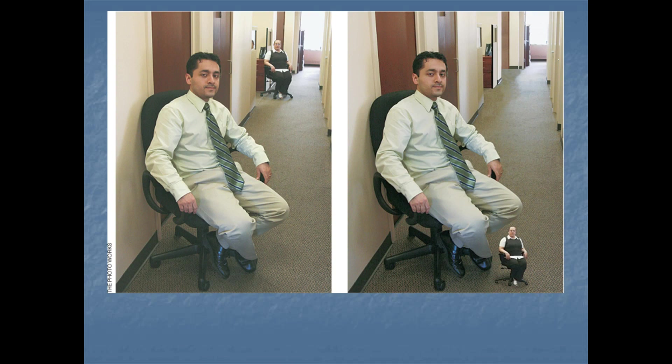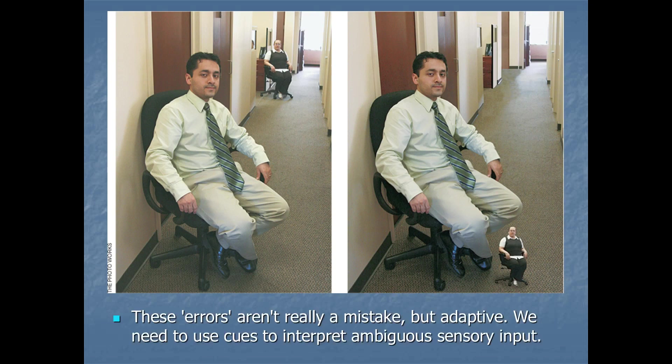So these are just examples. These all these illusions that we've seen here, and we'll see lots more throughout the semester, they're kind of errors in our system where what we perceive is not a direct match with reality. We're not perceiving reality correctly. That's what we call them illusions. But these errors aren't really a mistake. They're adaptive. We need our brain to use cues to interpret sensory input because sensory input is often ambiguous, as we'll see. Our brain has to make guesses because the stuff that hits our eyes, the proximal stimulus, doesn't give us enough information to deduce what's going on out in the world between many possible states of reality.